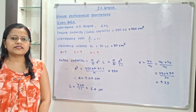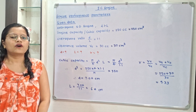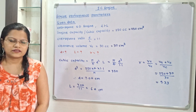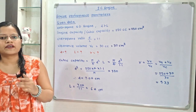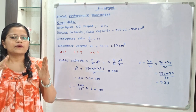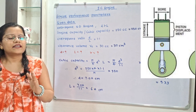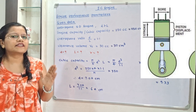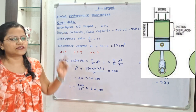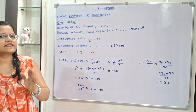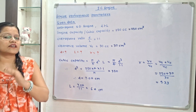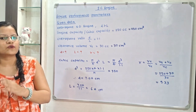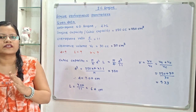Let us understand the given data. An over-square SI engine is given. In an over-square engine, bore diameter D is greater than stroke length L. When D is less than L, it is known as an under-square engine, and when D is equal to L, it is known as a square engine.